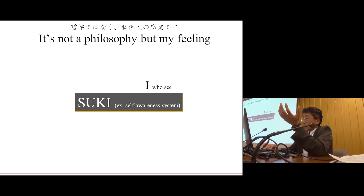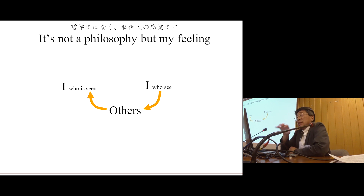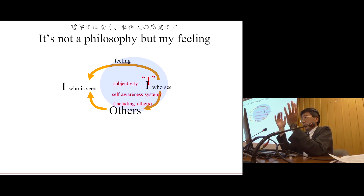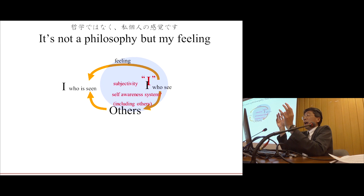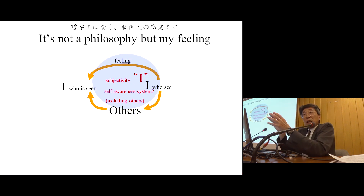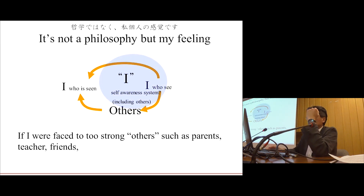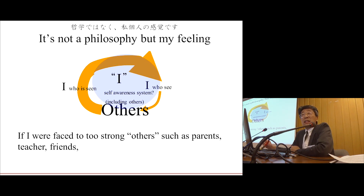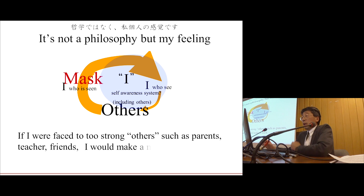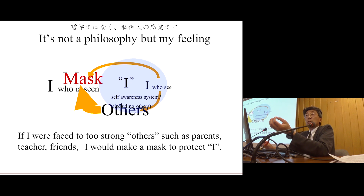I see the others and others see me. So there's an 'I who sees' and an 'I who is being seen.' Between this 'I who is seeing' and 'I who sees' is the subjective I. I feel something like this. If the others — parents, teachers, friends — are too strong, then we make masks. The mask is who I see, to protect the true I.